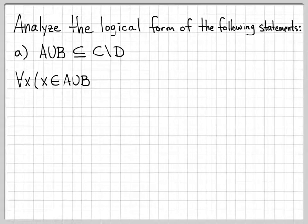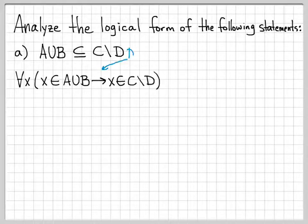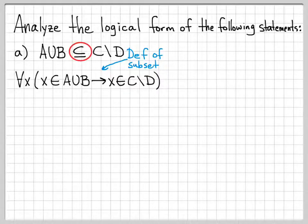First, let's work in what it means to be a subset. If A union B is a subset of C difference D, that means every element of the set A union B is also an element of C difference D. So this means for all x, x in A union B implies that x is in C difference D. That's just the definition of a subset, and I've already been able to get rid of the subset symbol by substituting in a logically equivalent expression.